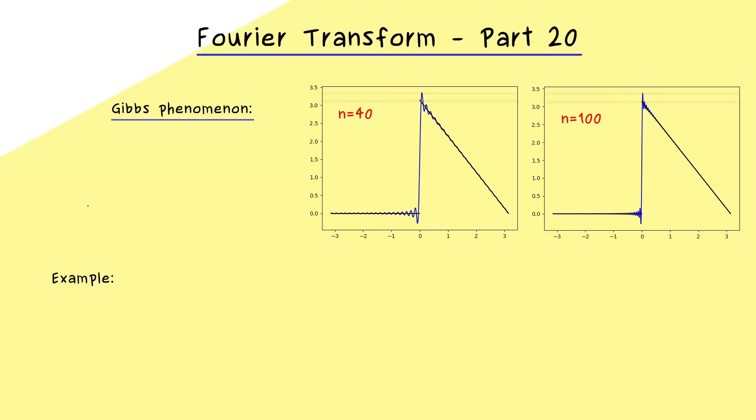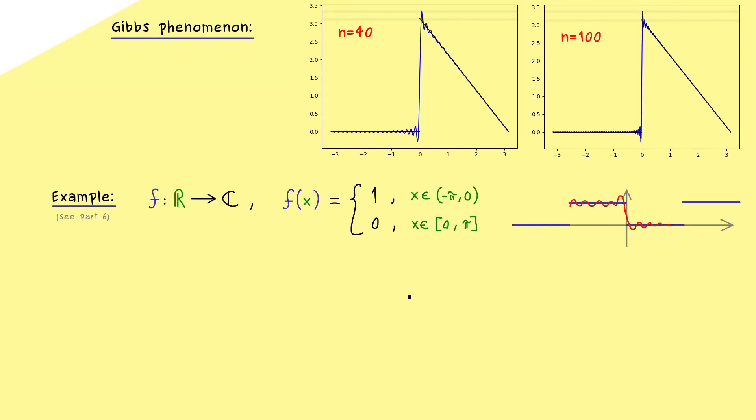So you can remember, Gibbs phenomenon says we cannot get rid of this overshooting with a finite Fourier approximation. And we can actually prove it in general, but to keep it short, let's prove it for a given example. And I want to take a standard example of a step function like we have discussed in part 6 already. Well, then let's define this function f that only takes the values 1 and 0. And as you can see, this function has a negative jump at the origin. It goes from 1 to 0. And as always, defining the function from minus pi to pi is enough, because we extend it pi periodically.